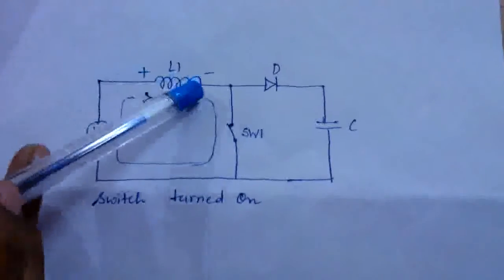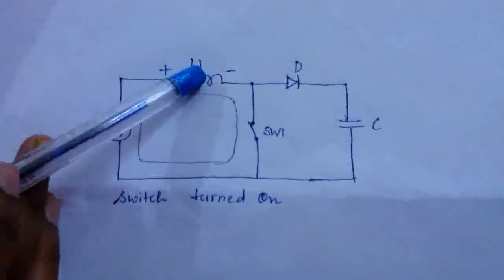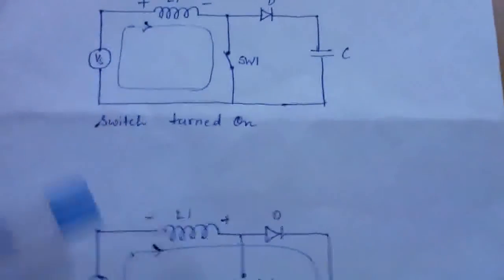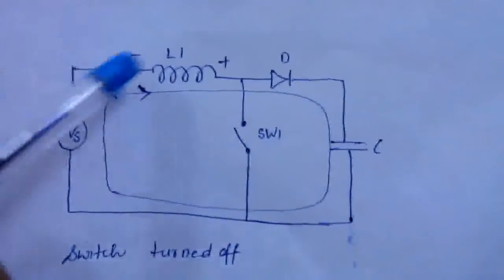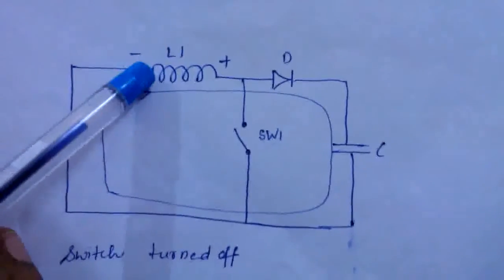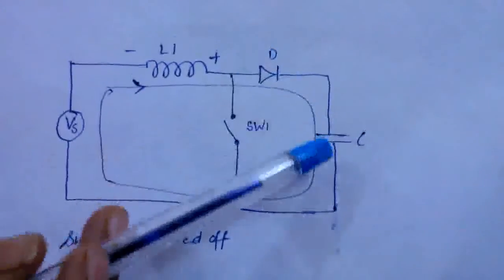When the switch is turned on as shown in the figure, current flows to the inductor and energy is stored in it. When the switch is turned off as shown in the figure, the only path available to the inductor current is to the diode and capacitor.